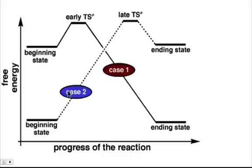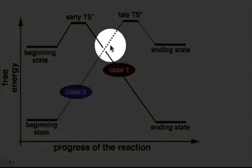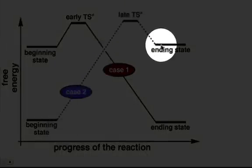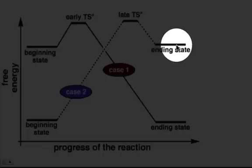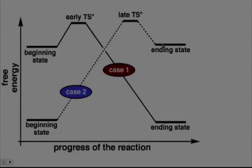In the second case, when we go up in energy from our beginning state, climbing this mountain to a transition state, and ending at a state that's higher in energy than where we began, this is a late transition state — because that transition state will resemble the products more than it will the reactants.